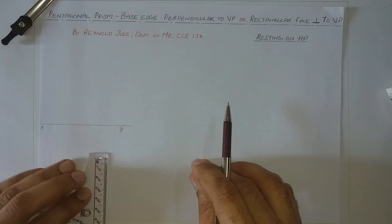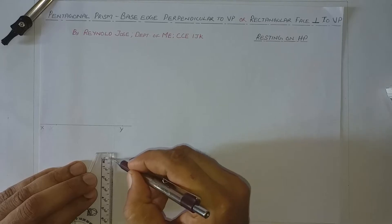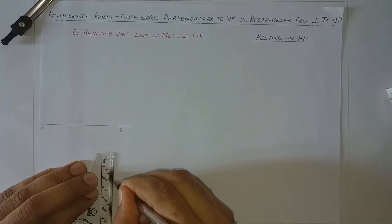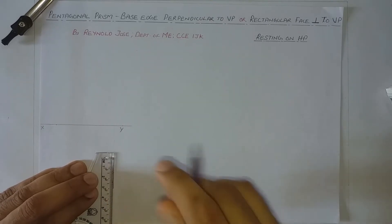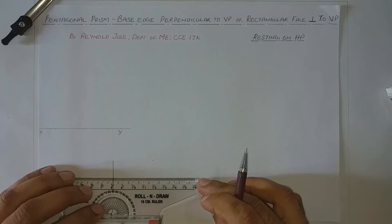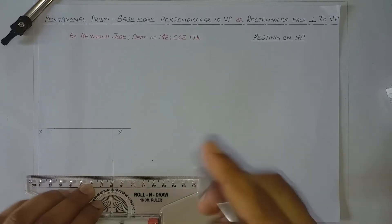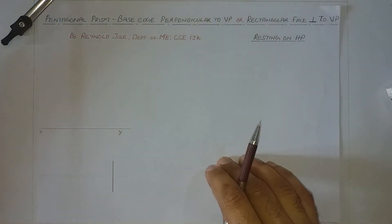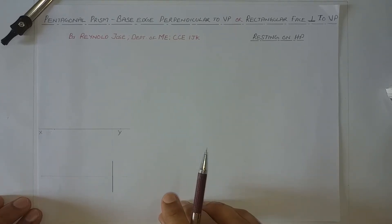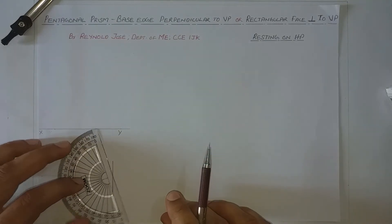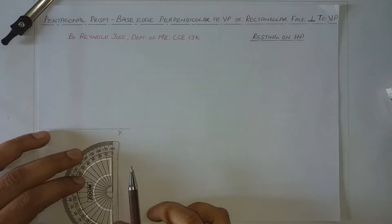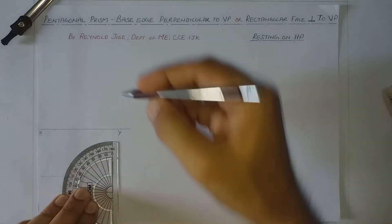We shall assume that the base edge length is 30 mm. Marking the center of this 30 mm as 15 mm. The next step is drawing a perpendicular bisector to this line — again it is a thin line. Next, from one of the ends of this line, we shall take an angle of 54°. What is 54°? It is the half included angle of a pentagon — the included angle of a pentagon is 108°, and half of it is 54°.